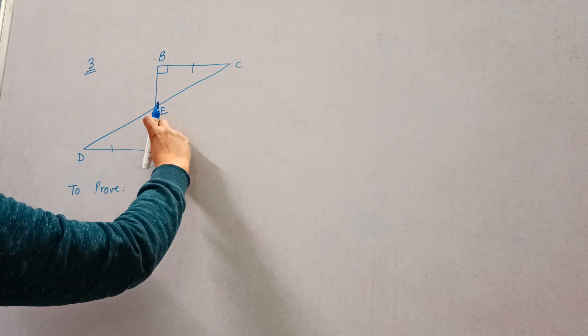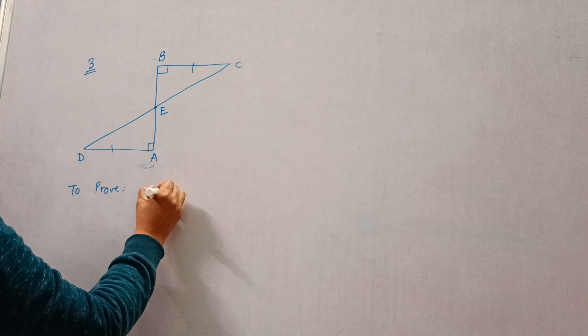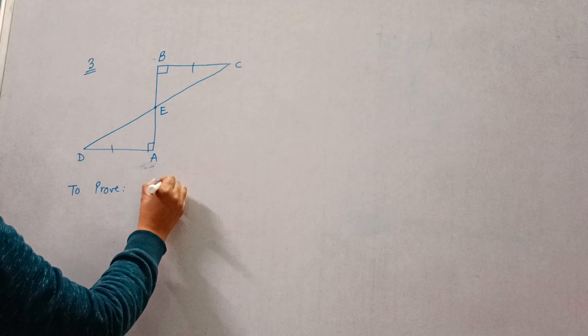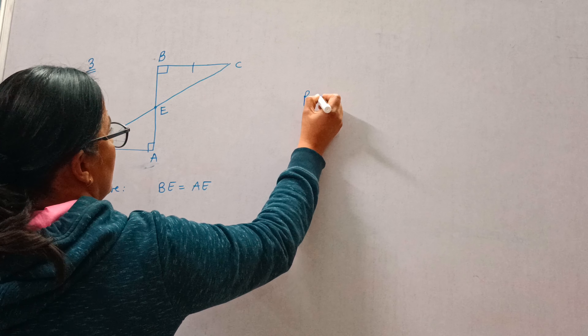We need to show that CD bisects AB, meaning we have to prove that BE is equal to AE.